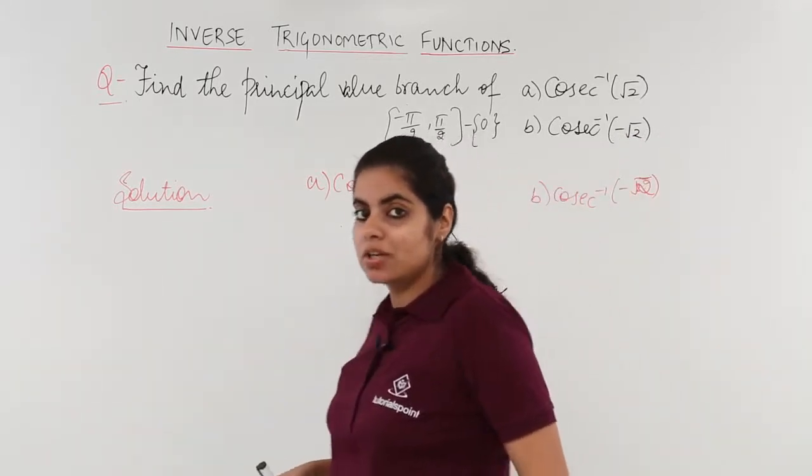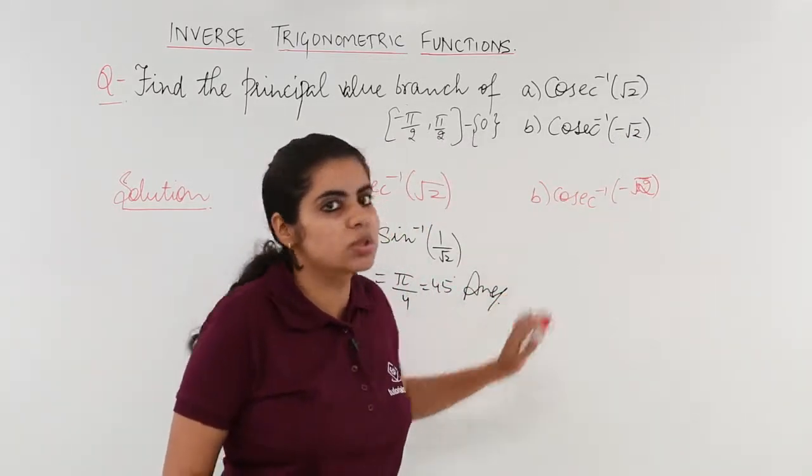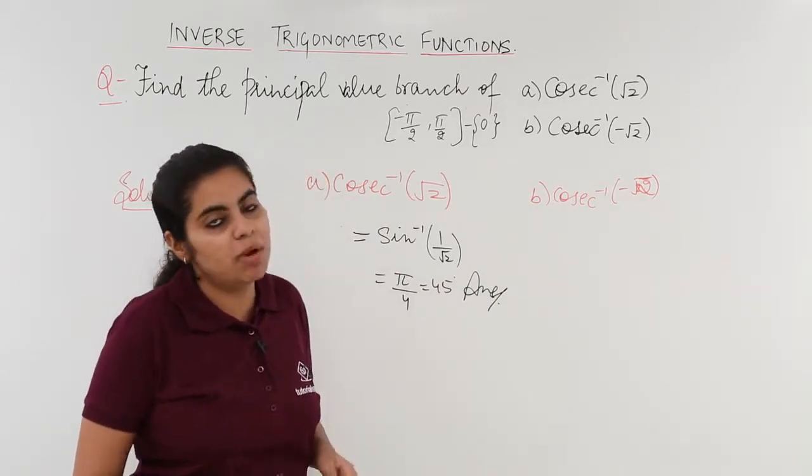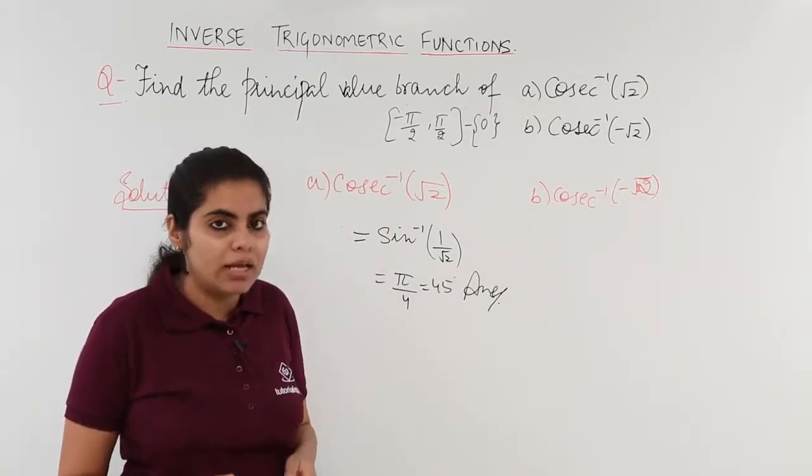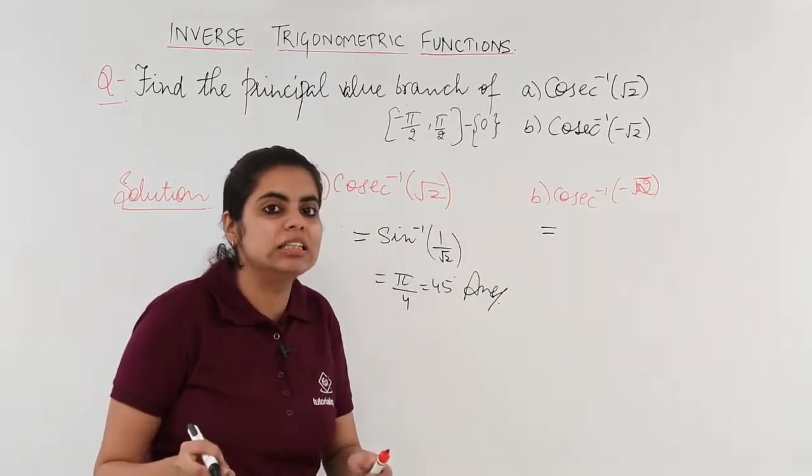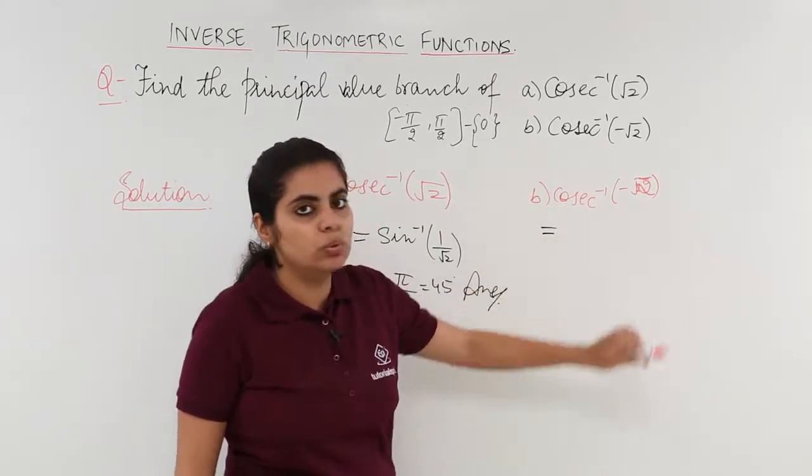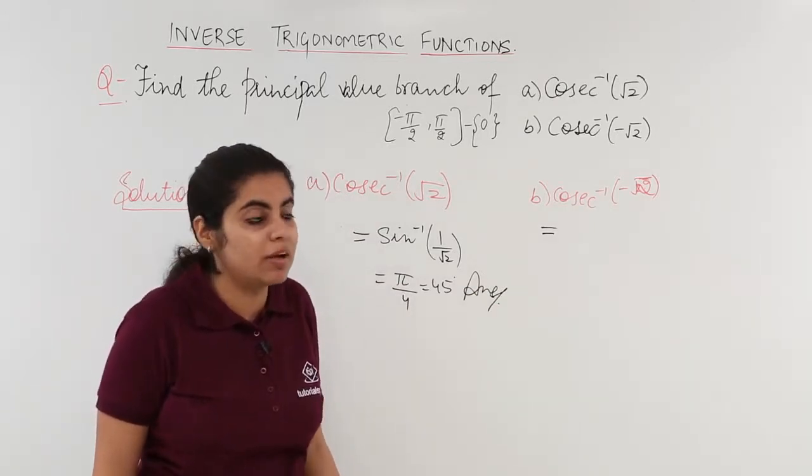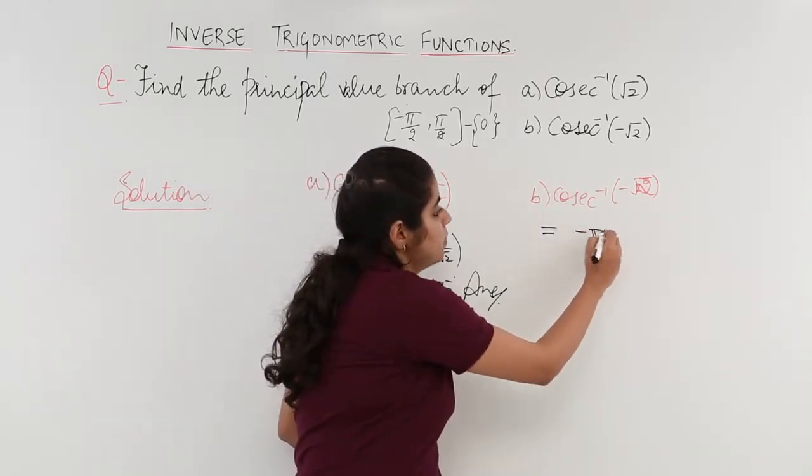Now the next thing into consideration is: what is the answer to this question? Cosecant inverse minus root 2. Minus root 2 means what angle will give me this value? The angle is minus 45 degrees, which is minus pi by 4.